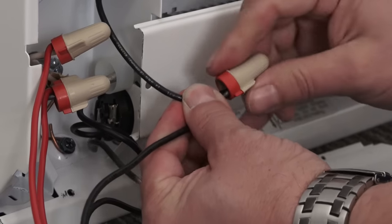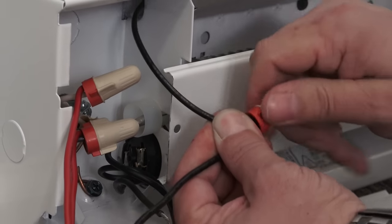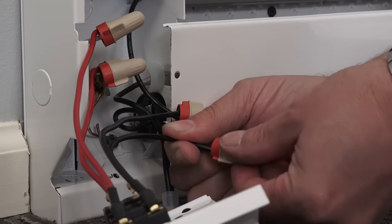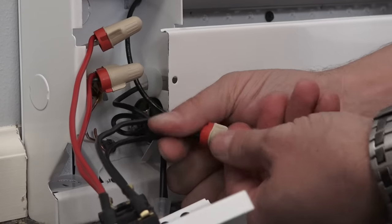Take one black wire from the thermostat and connect it up to either one of the black wires in the heater. Take the other black wire from the thermostat and connect it up to the remaining black wire in the heater.